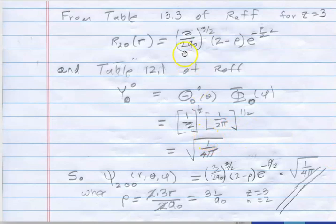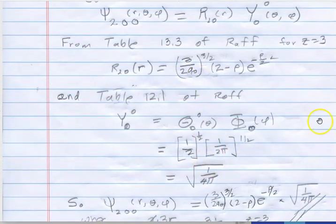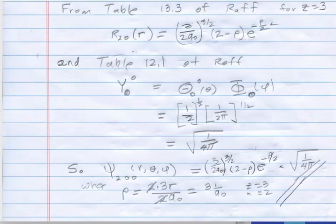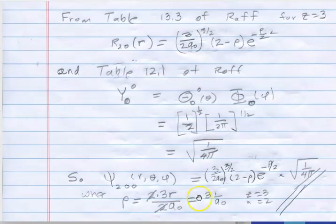And then just plug these two values in. So 3 halves, a naught to the 3 halves, 2 minus rho, e to the minus rho times the square root of 1 over 4 pi.